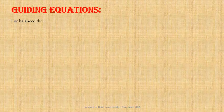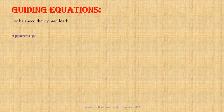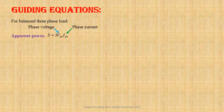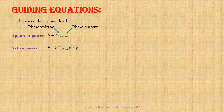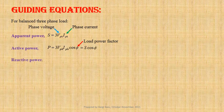For balanced three-phase load, total apparent power S equals three times V_phase into I_phase, where V_phase is the phase voltage and I_phase is the phase current. Total active power P equals three times V_phase into I_phase cos phi, where cos phi is the load power factor. P may be expressed as S into cos phi. Total reactive power Q equals three times V_phase into I_phase sin phi, that is equal to S into sin phi.